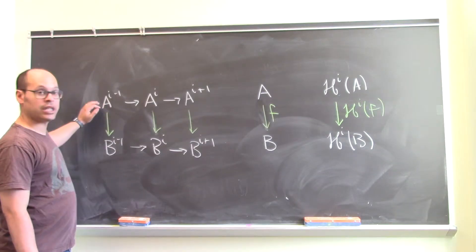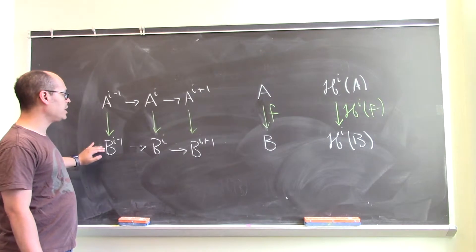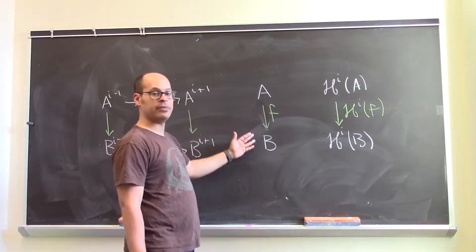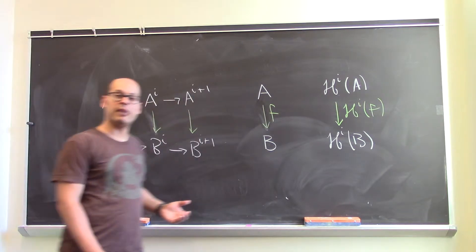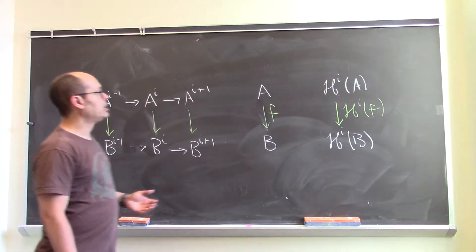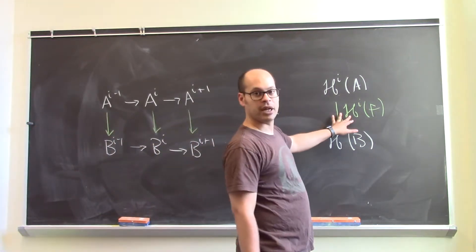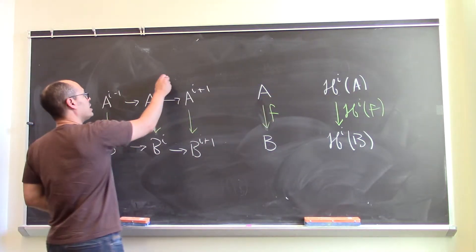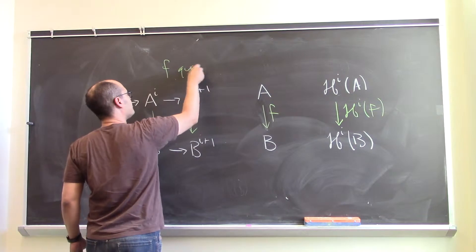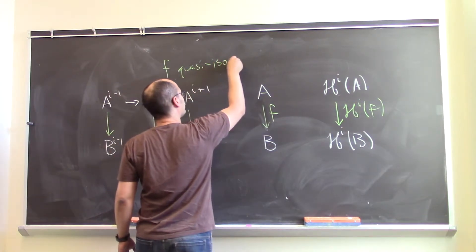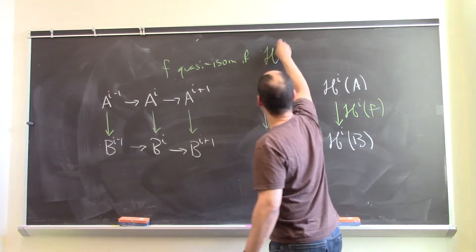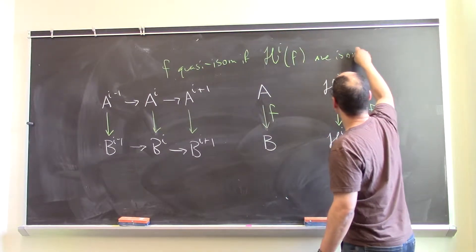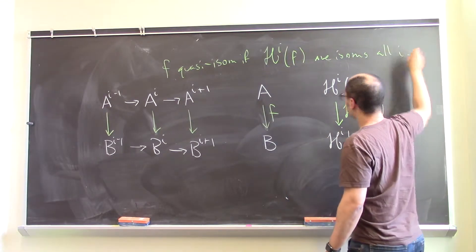Given a pair of cochain complexes, the A's and the B's, and a morphism of cochain complexes, say F from the A's to the B's, there are induced maps on the cohomology groups, which we could call H^i of F for each i. You say that a map F is a quasi-isomorphism if each of these induced maps on the cohomology are isomorphisms for all i.